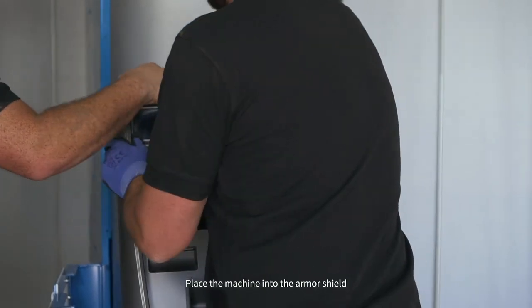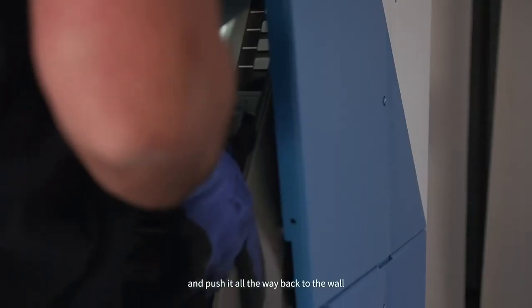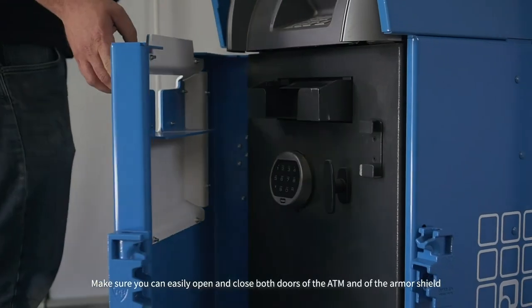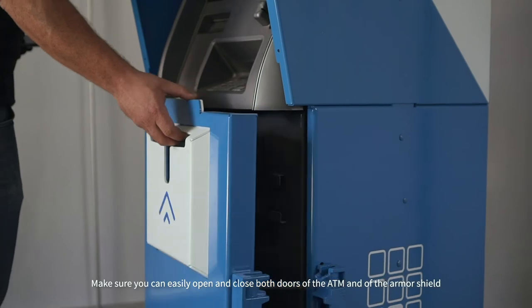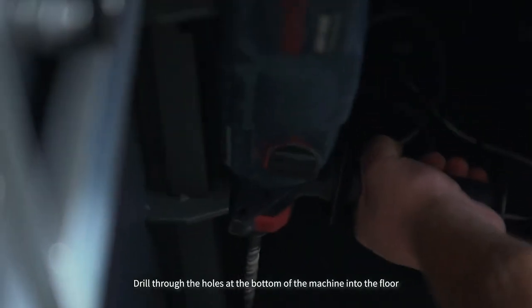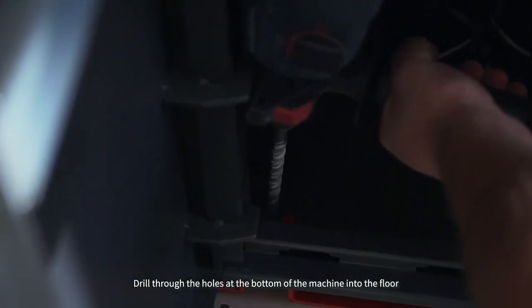Place the machine into the armor shield and push it all the way back to the wall. Make sure you can easily open and close both doors of the ATM and of the armor shield. Drill through the holes at the bottom of the machine into the floor.